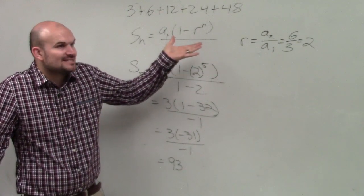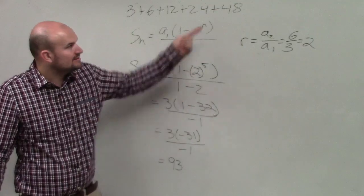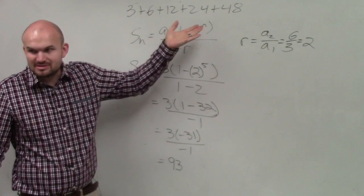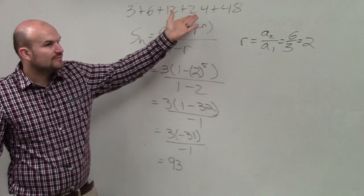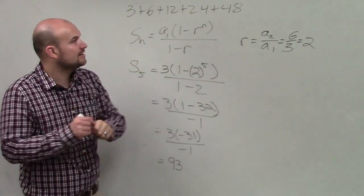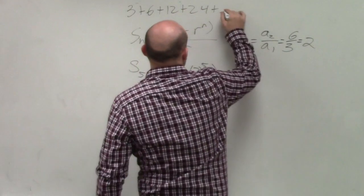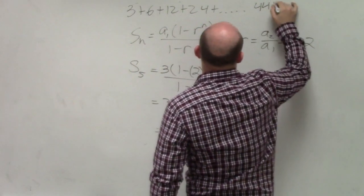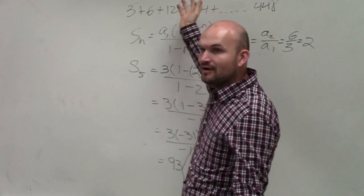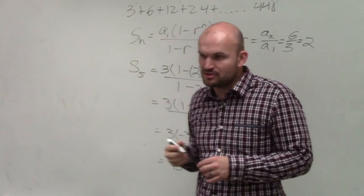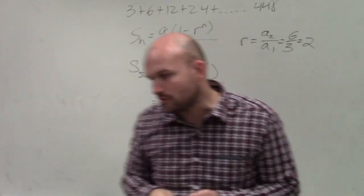So using the formula or adding them works the same. Now, obviously, if you guys are going to take a test, I would say, don't use the formula. Use this, right? I mean, it's similar. But what if the last number was like 448 or something? Then you'd have a much bigger problem here, because you'd have to figure out how many numbers were in that sequence, series, and so forth.